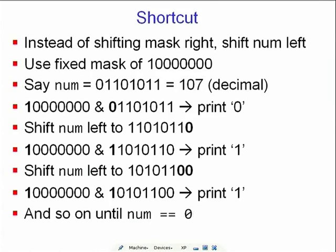We can do this more efficiently without using a mask by shifting the number instead. Rather than shifting the mask right, shift the number left, using a fixed mask of 1 followed by all zeros. Say the number is 107 in decimal, which is 0110 1011.